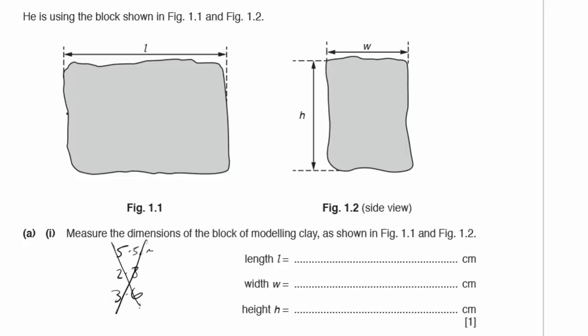Those measurements are wrong according to the mark scheme, because I don't have a physical exam paper — I printed the PDF, which rescaled the image. The actual answers the mark scheme is looking for are 6.0 centimetres, 3.0 centimetres, and 4.0 centimetres. If your answers differ due to resizing, don't worry — it can't be helped.